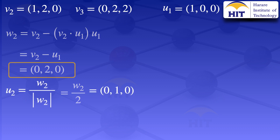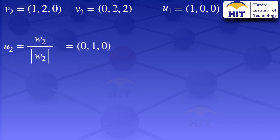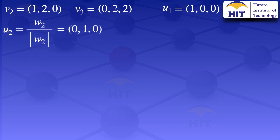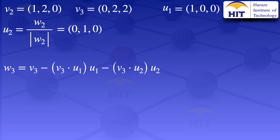We now have U1 and U2. We need to evaluate U3. To do that, we first have to find W3. W3 equals V3 minus the inner product of V3 and U1 times U1, minus the inner product of V3 and U2 times U2.